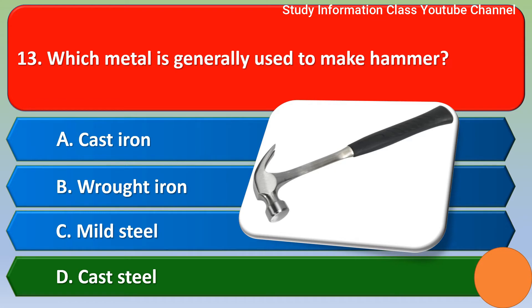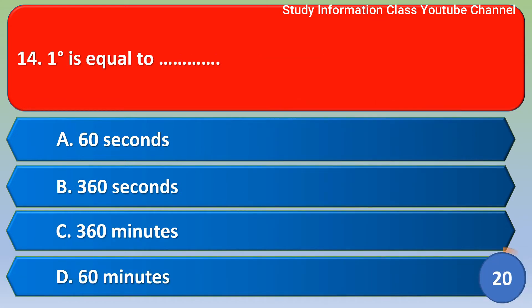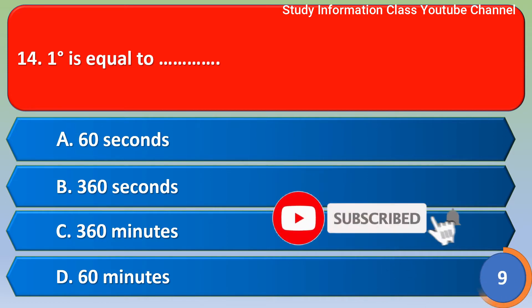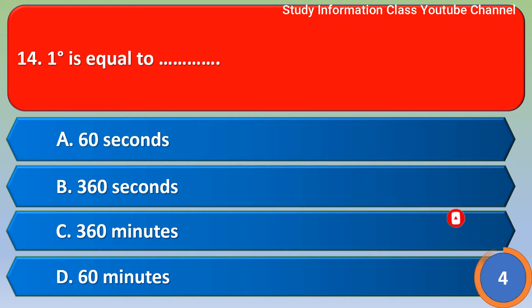Next question: one degree is equal to — options: 60 seconds, 360 seconds, 360 minutes, or 60 minutes. The correct answer is option D, 60 minutes.